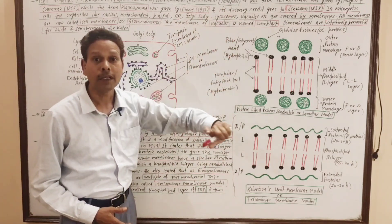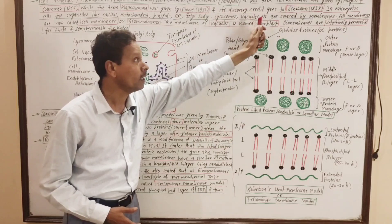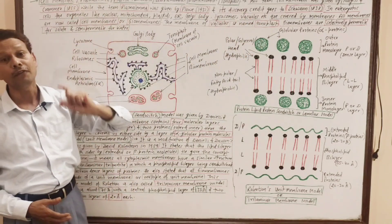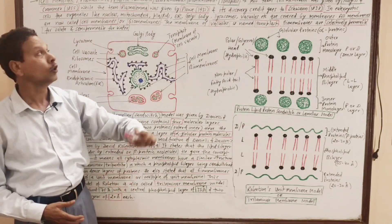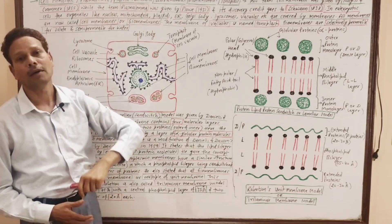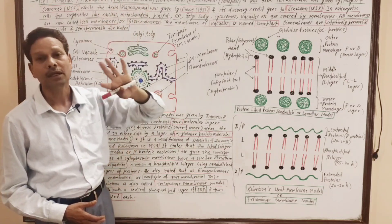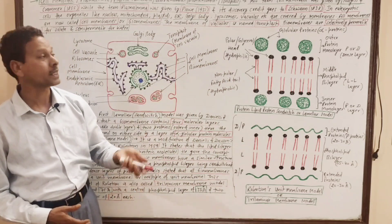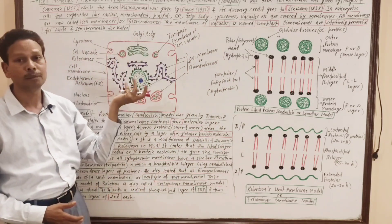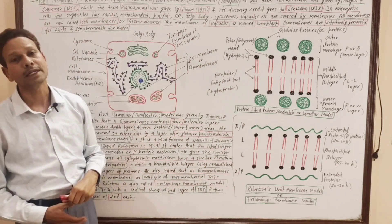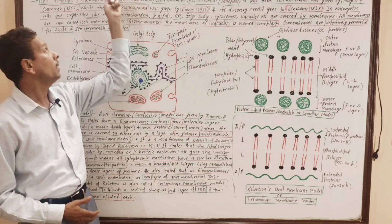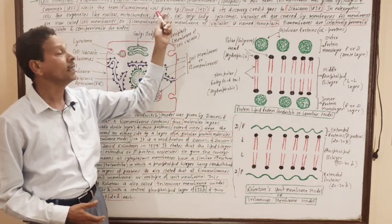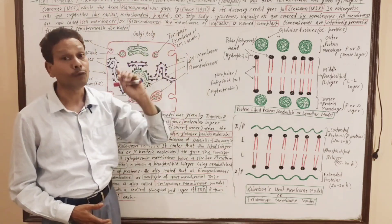The term 'plasmalemma' means the sheath or covering over the cytoplasm — the membrane covering the cell. This term 'plasmalemma' was given by Plough in 1931.